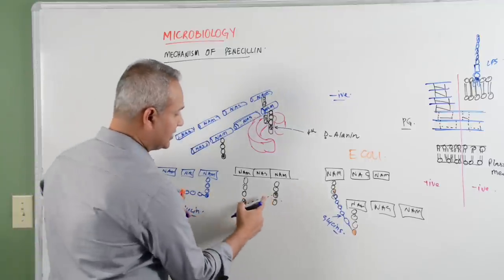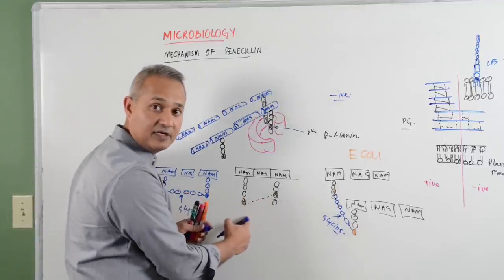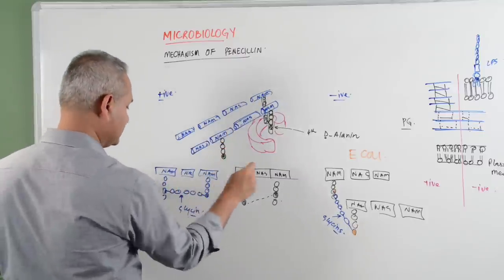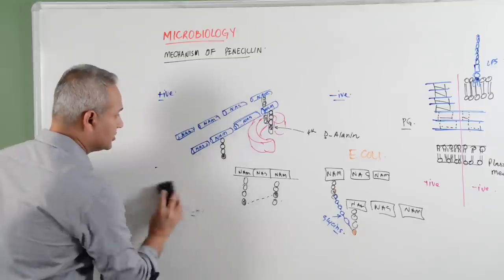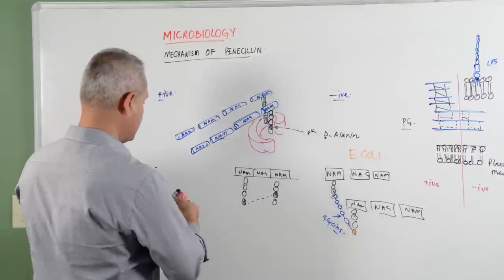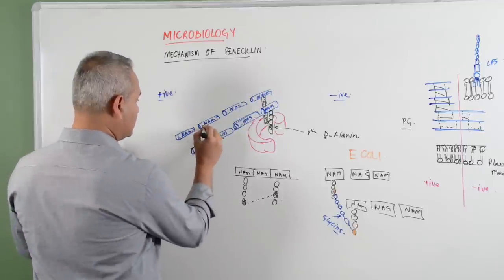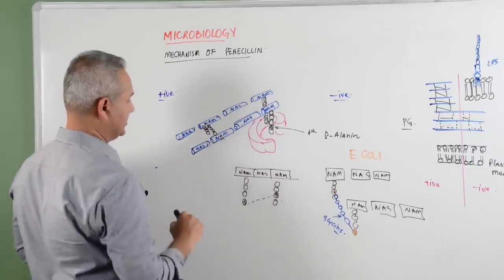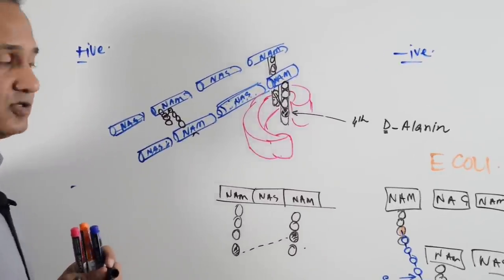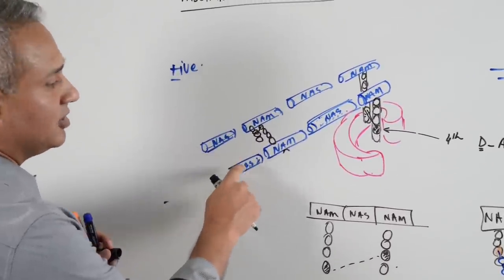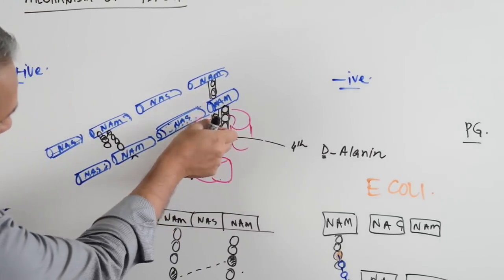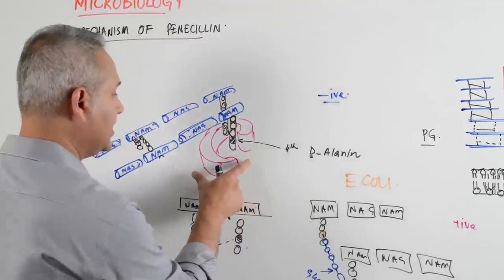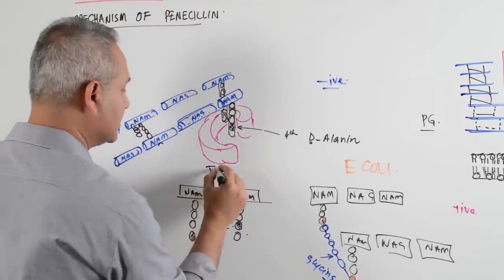In other cases these two directly combine without a glycine bridge - so that is how the structure forms in some bacteria, while in others they use the glycine bridge. But this cross-linking is done by the transpeptidase in both cases.